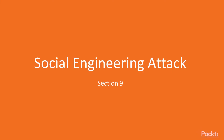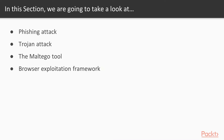Hello and welcome students to section 9 of the course: Social Engineering Attack. In this section we are going to take a look at various points. First we will learn how to perform a phishing attack, then we will create a trojan and perform a trojan attack. We will also use the Maltego tool inside Kali Linux and finally perform browser exploitation framework inside Kali Linux.